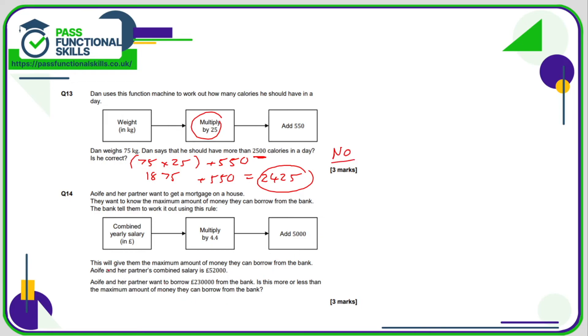Question number 14. So the combined salary of Ifa and a partner is £52,000. So the first thing we're doing in our function machine is we're multiplying the 52,000 by 4.4, and then once we've calculated that, we will add £5,000 to it. So £52,000 times 4.4 is 228,800. And now if we just add £5,000 on top of that as well, we are allowed to use a calculator for this question. That comes to a total of 233,800.